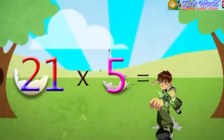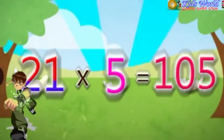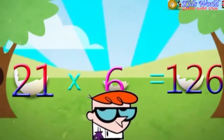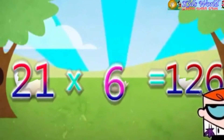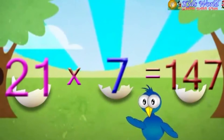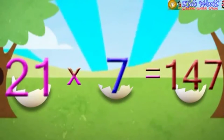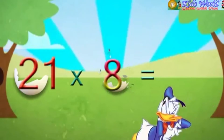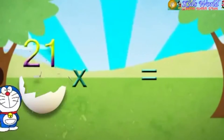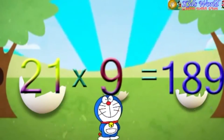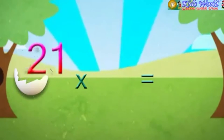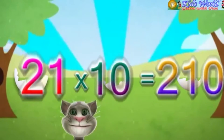21 into 5 is equal to 105. 21 into 6 is equal to 126. 21 into 7 is equal to 147. 21 into 8 is equal to 168. 21 into 9 is equal to 189. 21 into 10 is equal to 210.